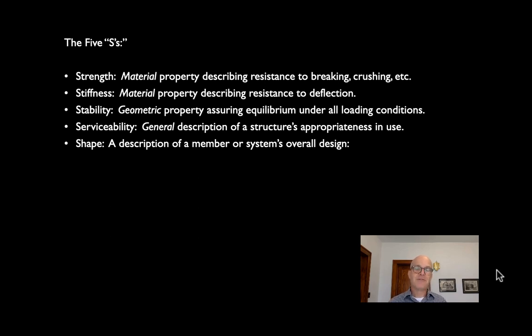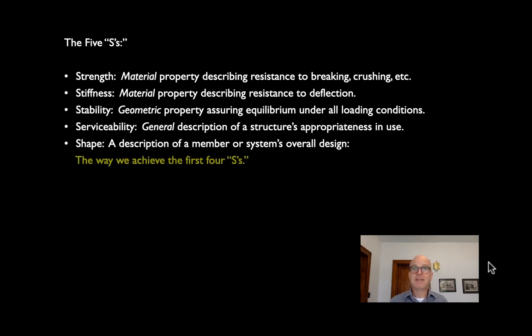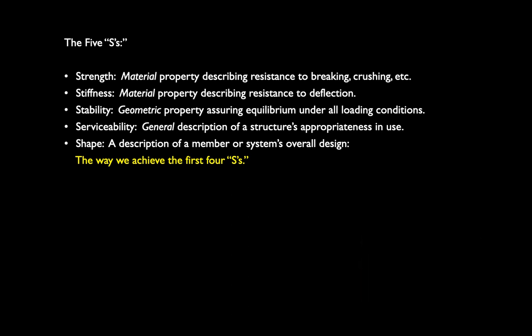The fifth S is the one we as architects are often most interested in, and that is shape — a description of a member or system's overall design, basically the geometry of the structural system or element. Time and time again we'll come back to shapes that do particular jobs really well. Shape is one of the things we have to address all the other four S's: we want the building to be strong, stiff, stable, and serviceable.